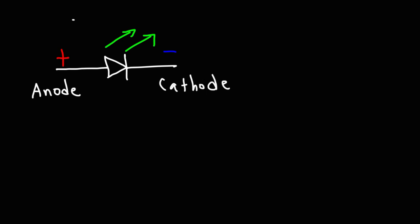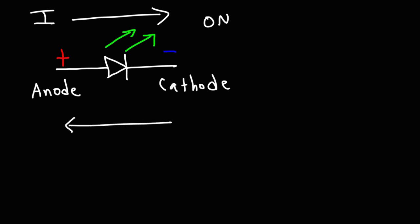When current flows from the anode to the cathode — this is conventional current — the LED will be on if the voltage is sufficient to turn it on. If you apply current in the opposite direction, the LED will be off.